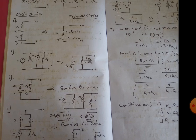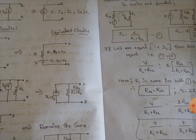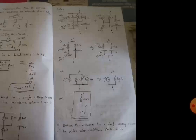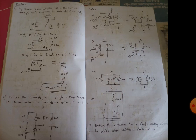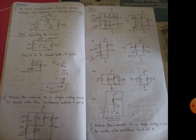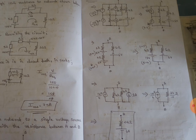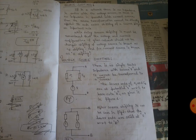Here are a few source transformation techniques. For source transformation, wherever there is a voltage source, we need to convert it to a current source along with the resistance. That is, if there is a voltage source along with a series resistance, we need to convert it to a current source along with the parallel resistance.